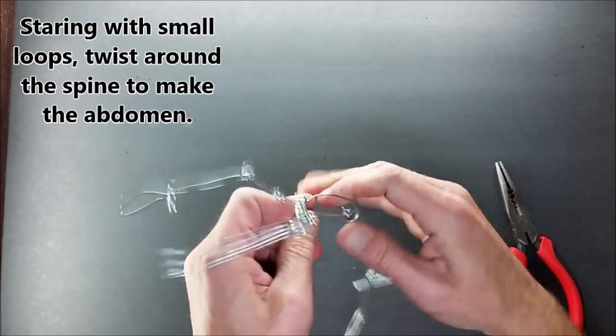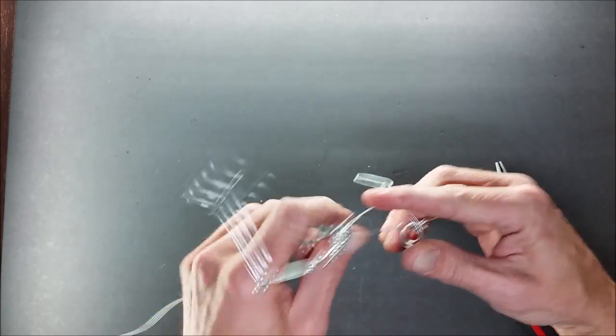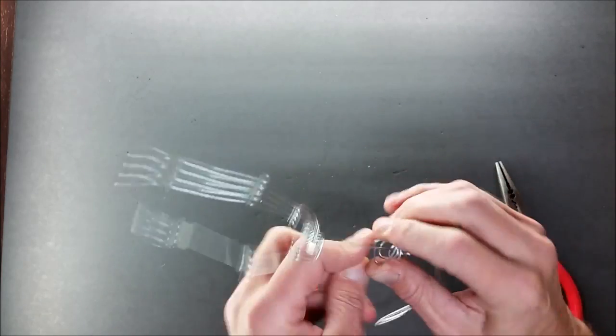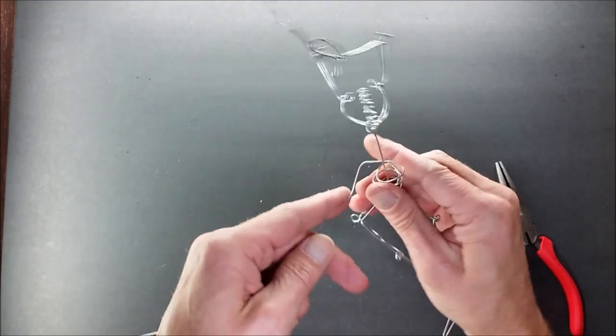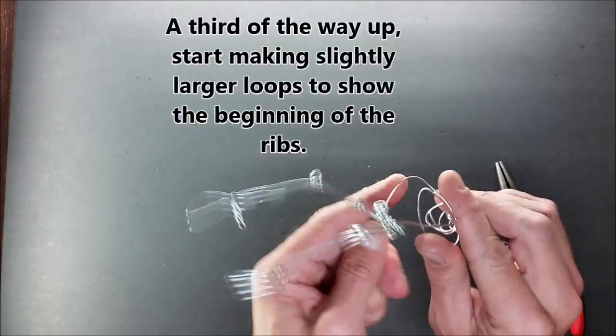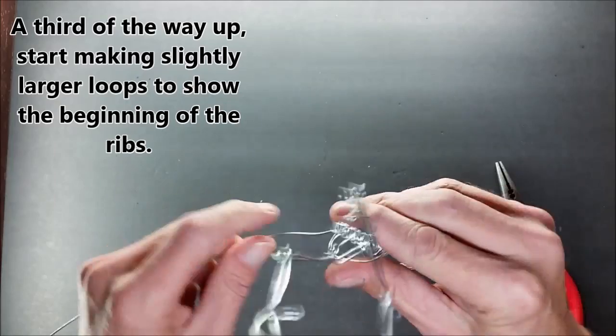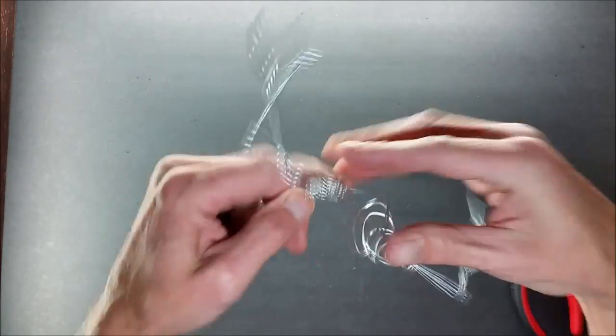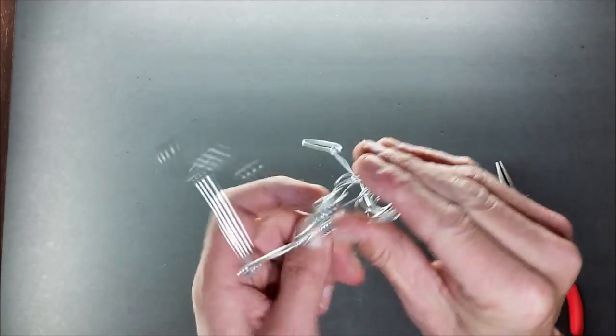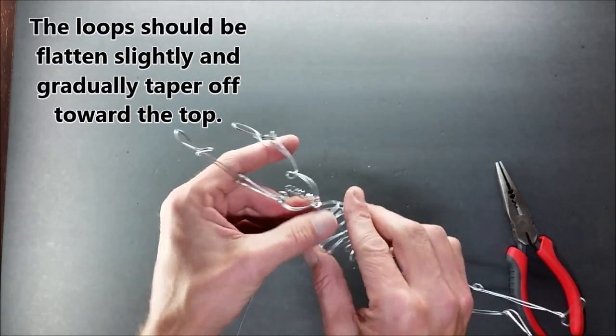And the only thing about aluminum is it's not very forgiving, so if you bend it in a way that you don't want it to bend, you run the risk of it snapping if you try to undo that. With steel wire, it's more forgiving, it will actually kind of stretch a little bit, so it'll go back into its shape without running the risk of it snapping. It will get kind of weak over time, but not as much as aluminum.